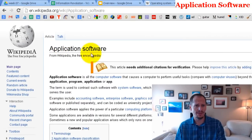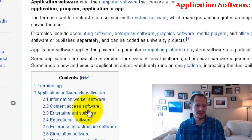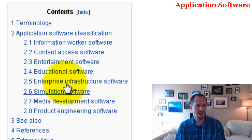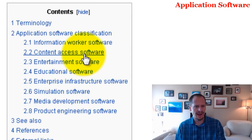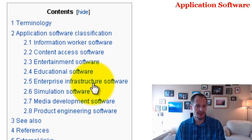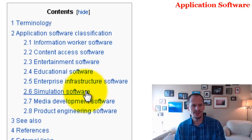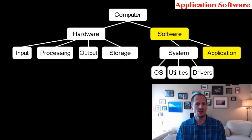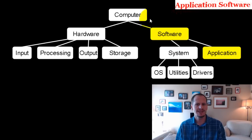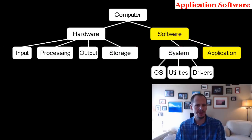If you go to Wikipedia and read about application software, here are some categories they've come up with: entertainment software, educational software, content access software, enterprise infrastructure software, simulation. They're just random categories. The most important thing for you to know is what application software is and where it falls in the entire schema of things — that's the key.